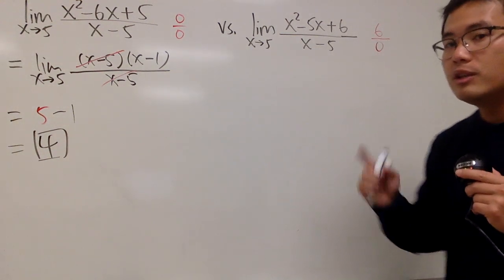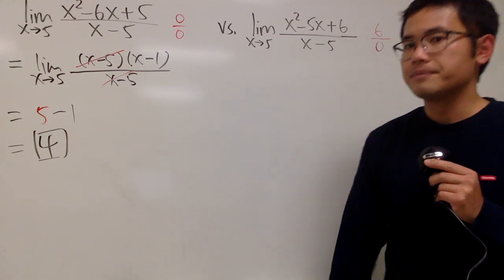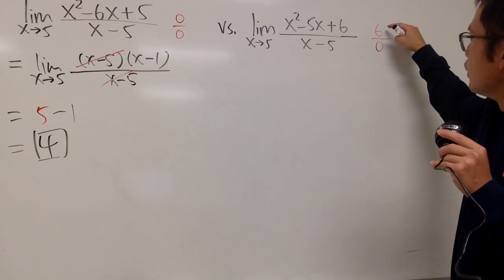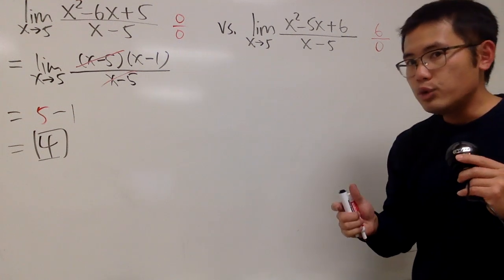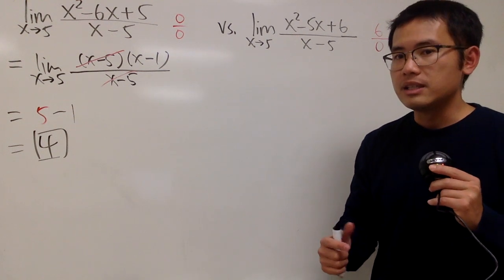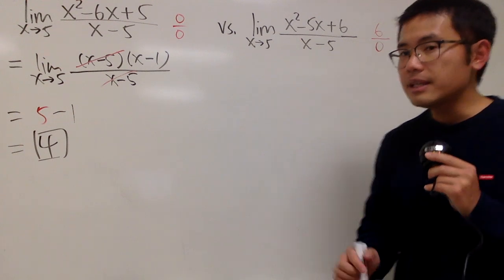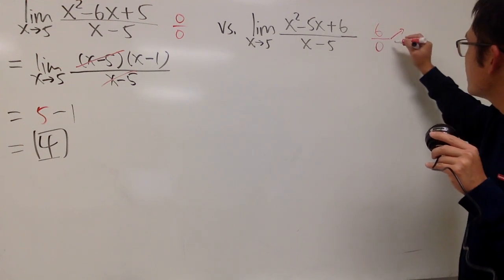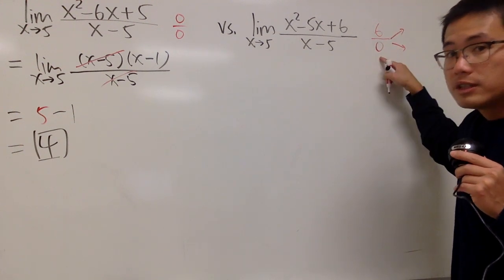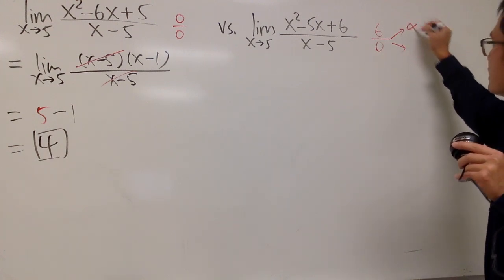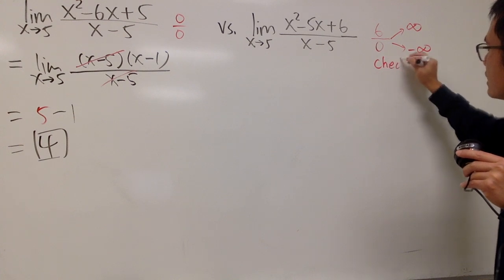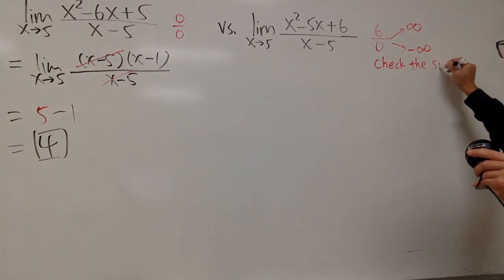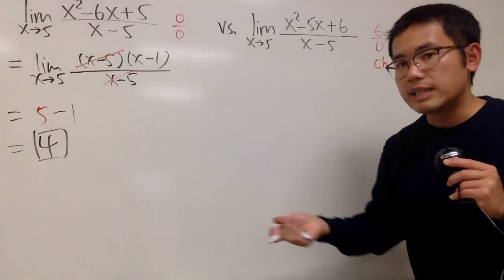However, for this one, be super careful with this. Notice that when we have a non-zero number over 0, we are going to end up with either positive infinity or negative infinity. We have to check the sign. So again, this right here, whenever we have a non-zero number over 0, either we get positive infinity or negative infinity. But again, we have to check the sign, if it's positive or negative.